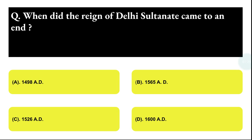Next question: when did the reign of the Delhi Sultanate come to an end? Option A: 1498, Option B: 1565, Option C: 1526, Option D: 1660. The correct answer is option C, that is 1526.